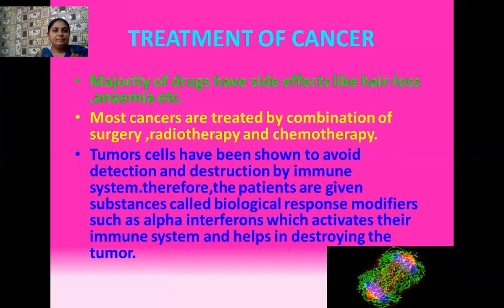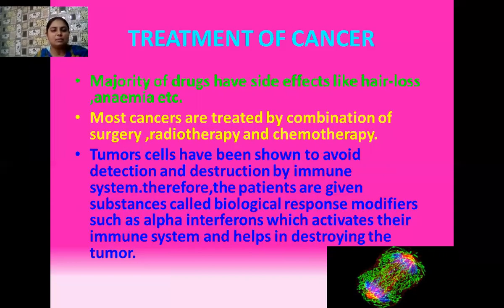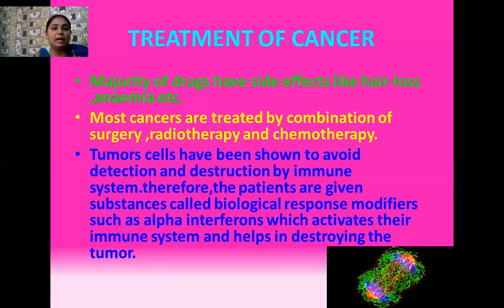In order to make the immune system more efficient and make it realize that these abnormal growth cells are actually not beneficial for our body, certain biological response modifiers such as interferons are injected into the patient's body. These biological response modifiers are quite helpful — they tell our immune system that these cells, though they are our own cells, are causing destruction of our other healthy cells and are harmful for us. In this way they make our immune system more efficient, and later our immune system shows a kind of response towards these cancer cells and starts destroying them.